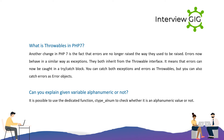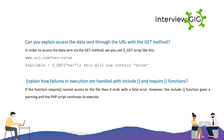Can you explain how to check if a given variable is alphanumeric or not? It is possible to use the dedicated function ctype_alnum() to check whether a value is alphanumeric or not.